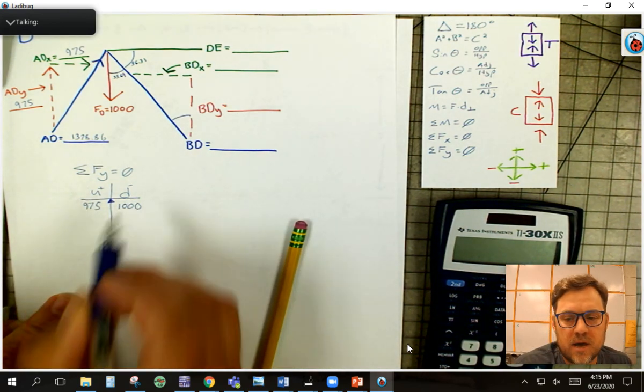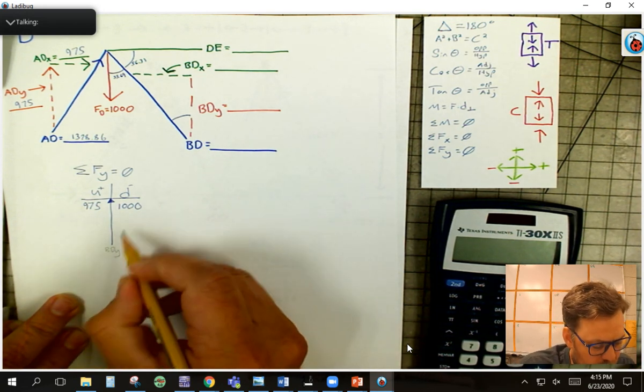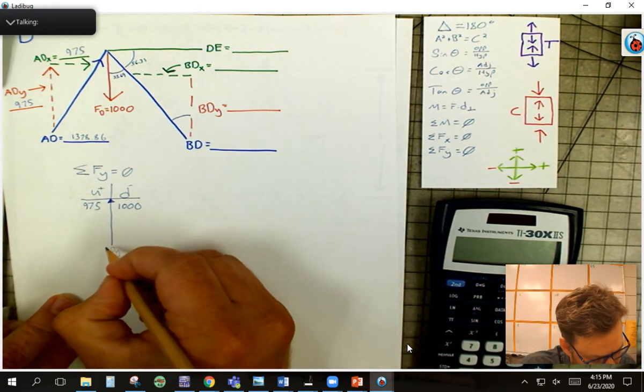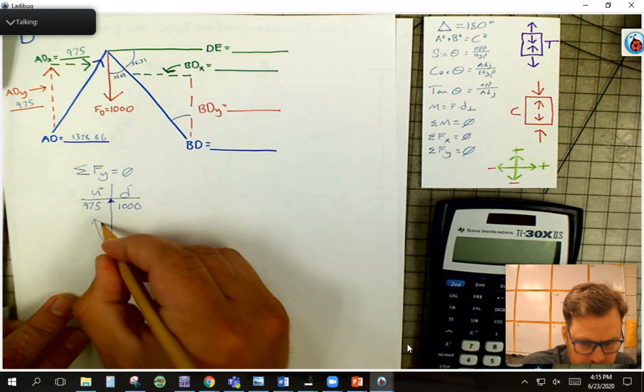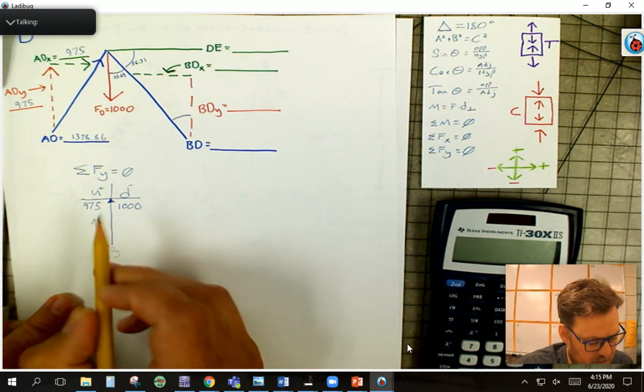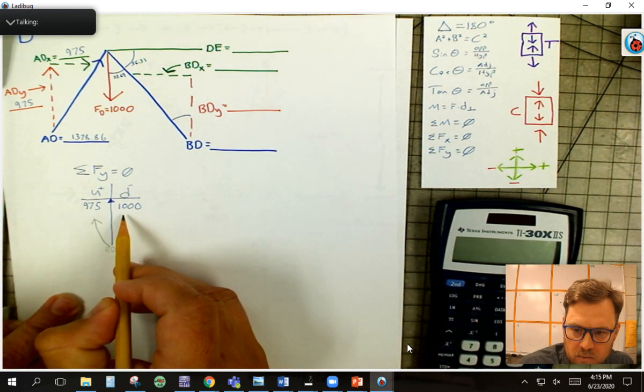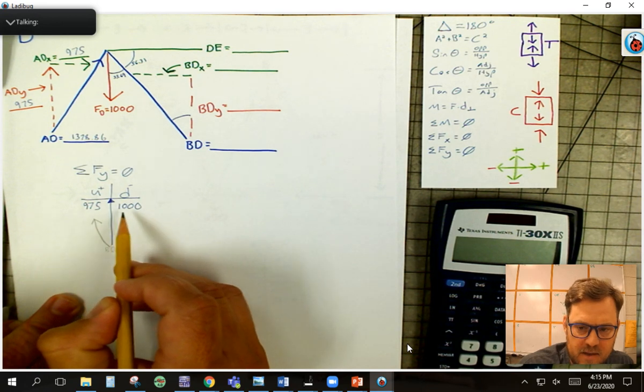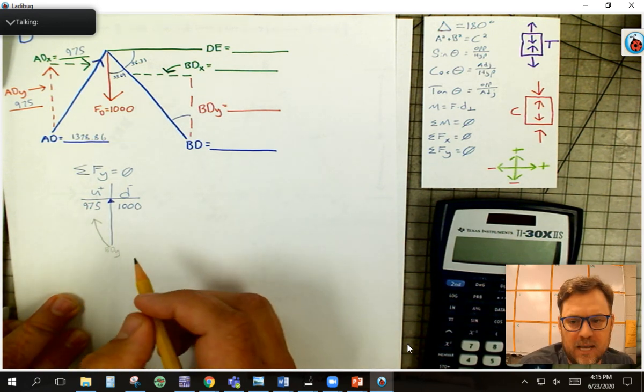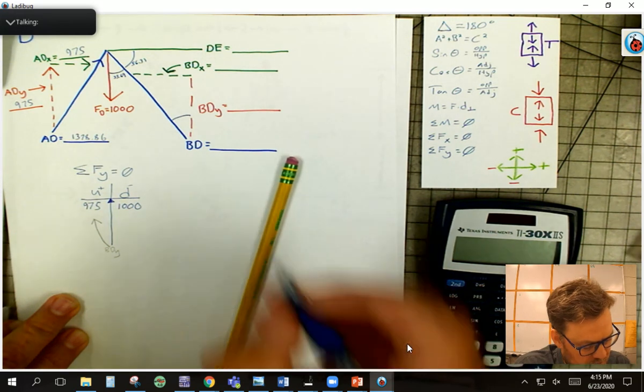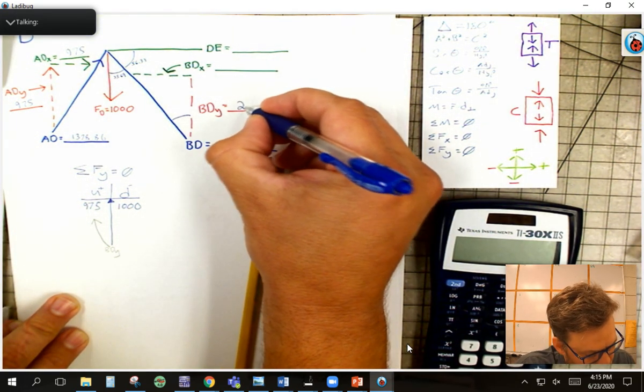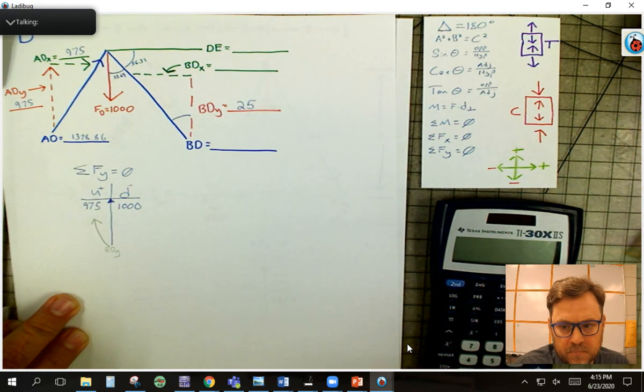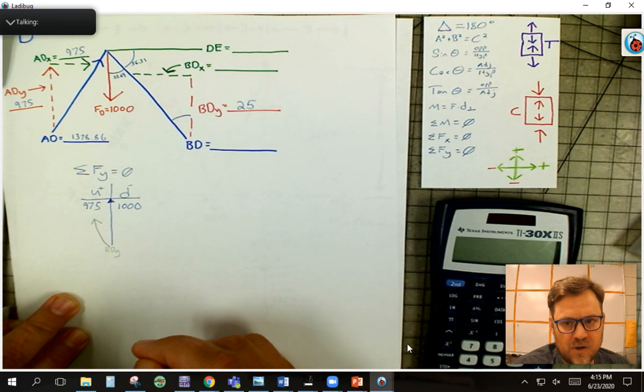Where is BDY going to go? Well, it's got to go over here, right, to balance it out because this is less than that. Well, what's the magnitude? 975 minus 1,000 tells me what BDY is. So BD and the Y is pretty simple. It's just 25, right? So that one's pretty easy to solve.